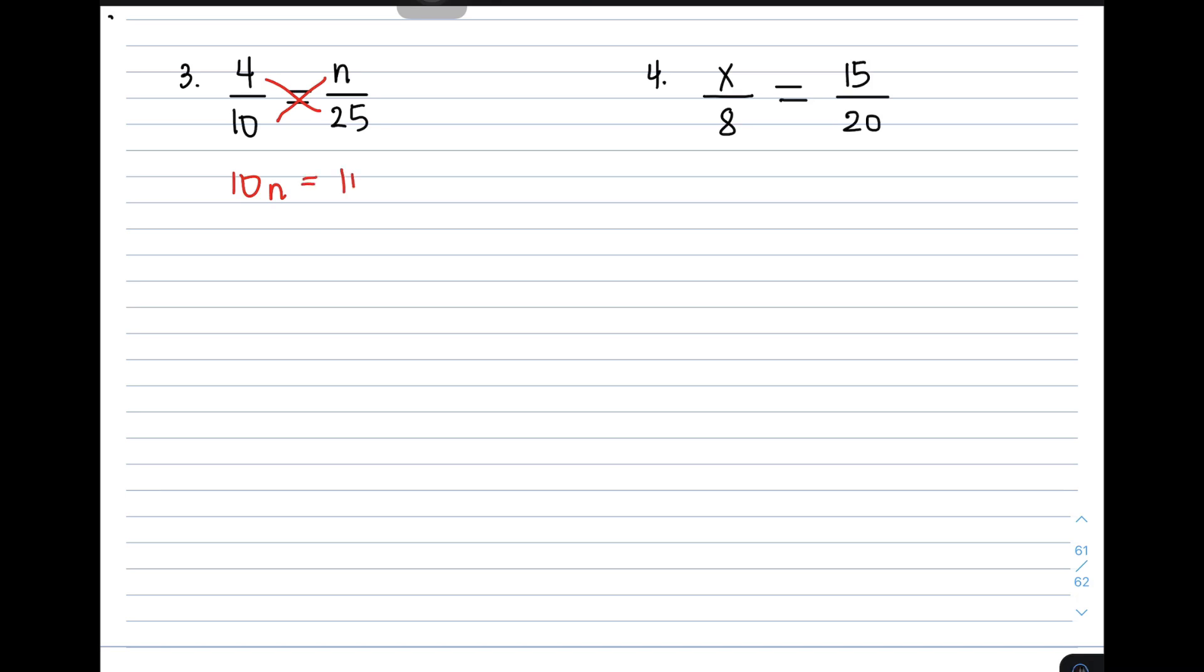So again, all we need to do is to eliminate the number beside the variable, for us to isolate the variable n. So we can divide the whole equation by 10.